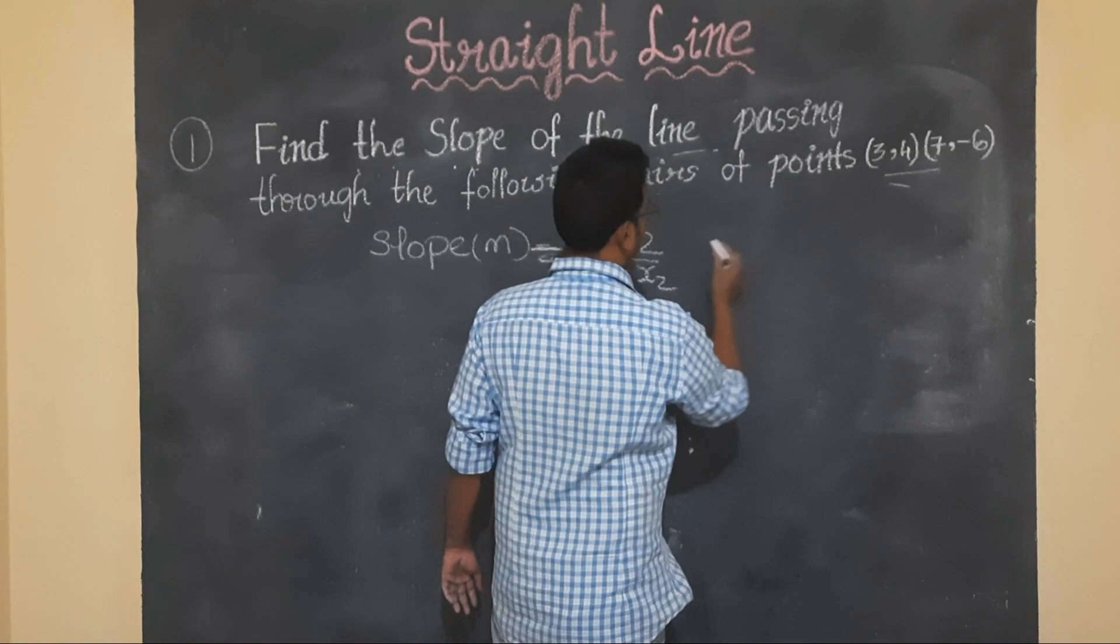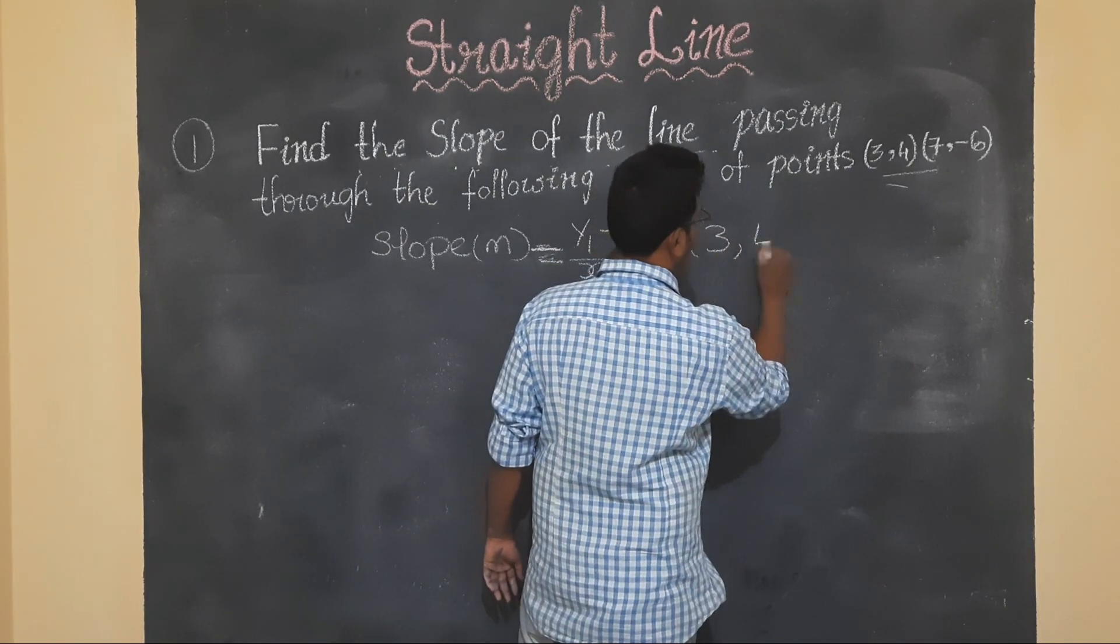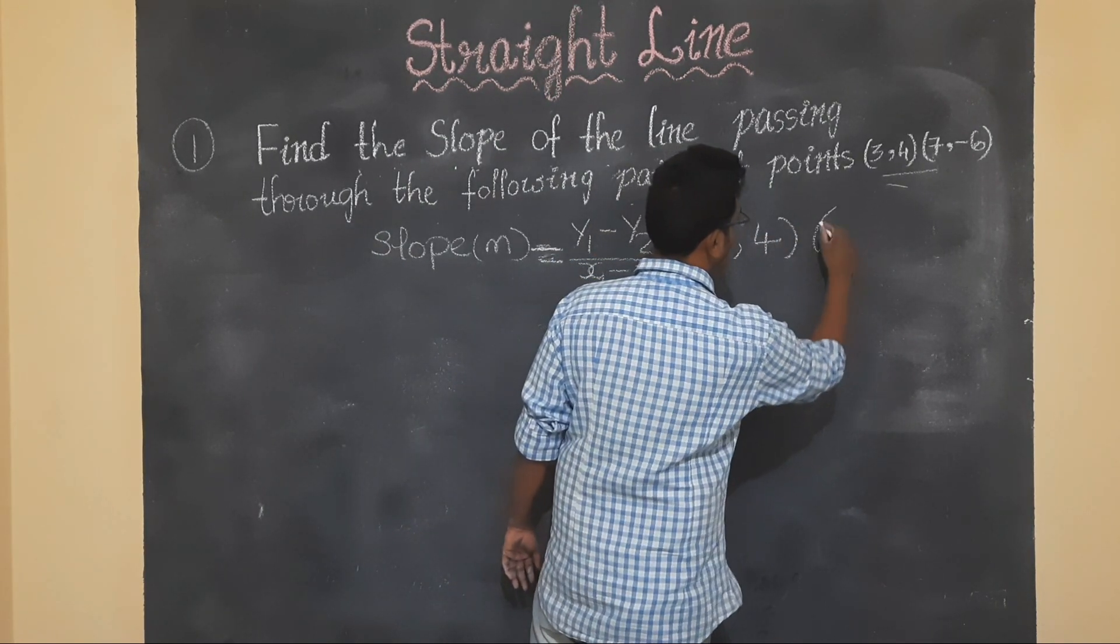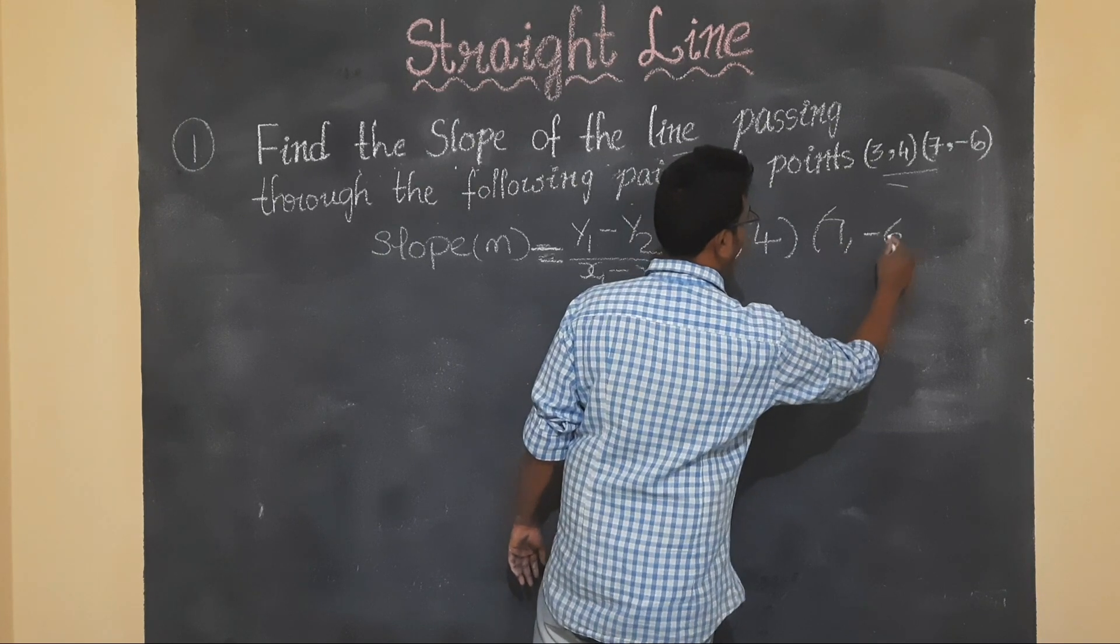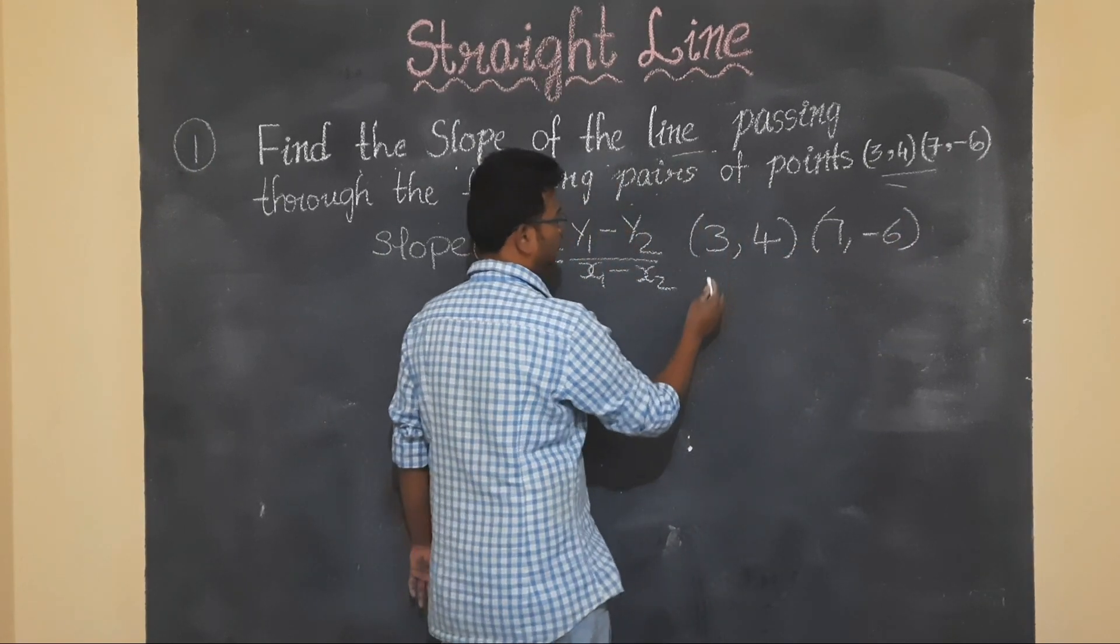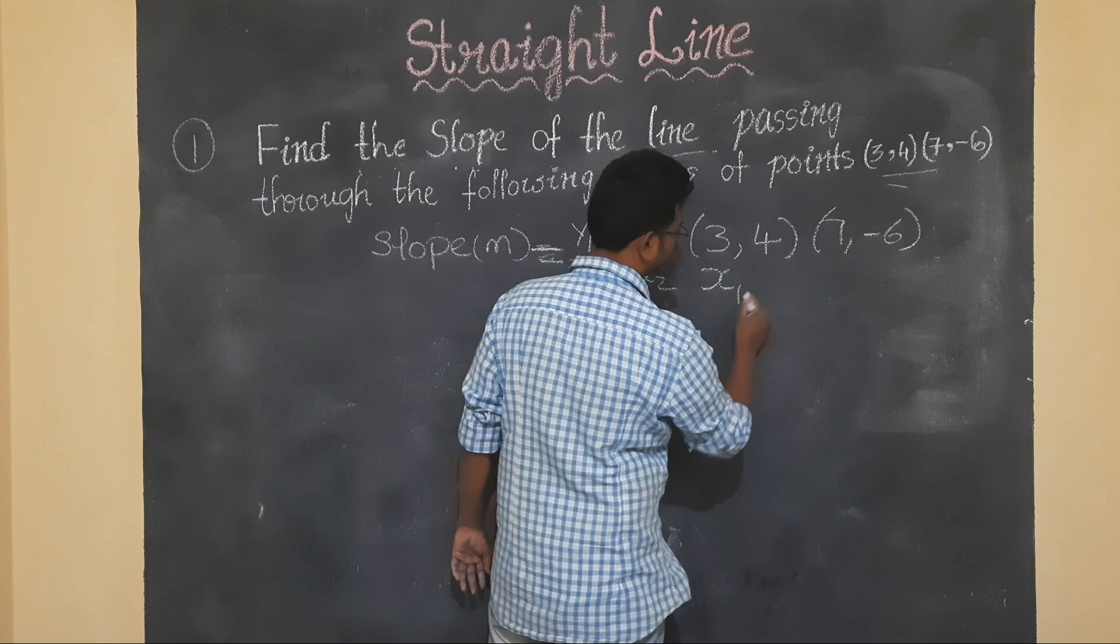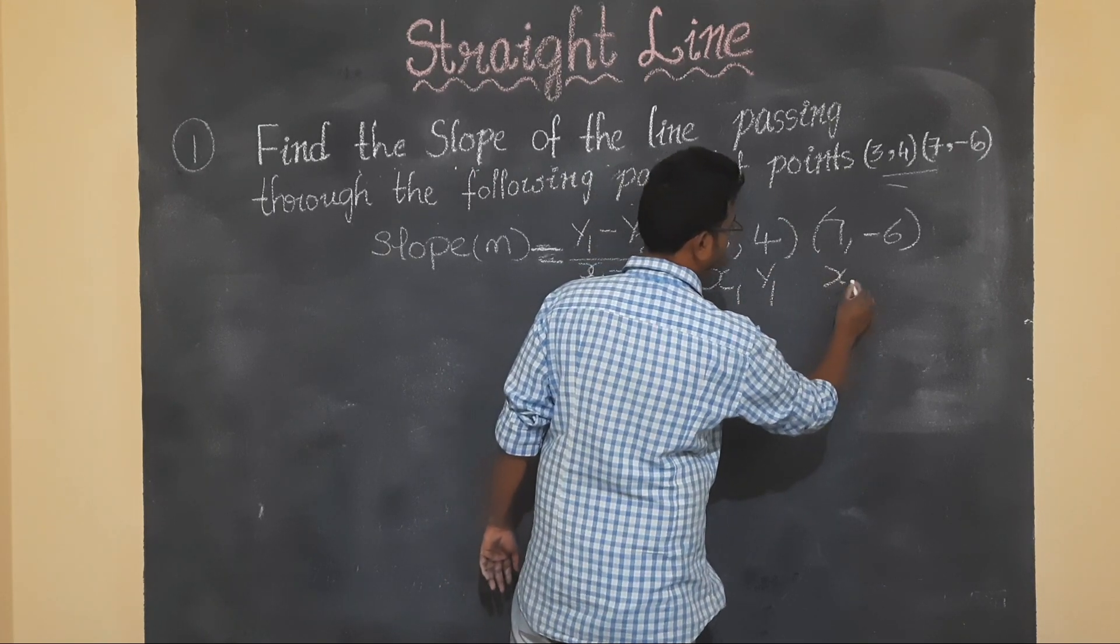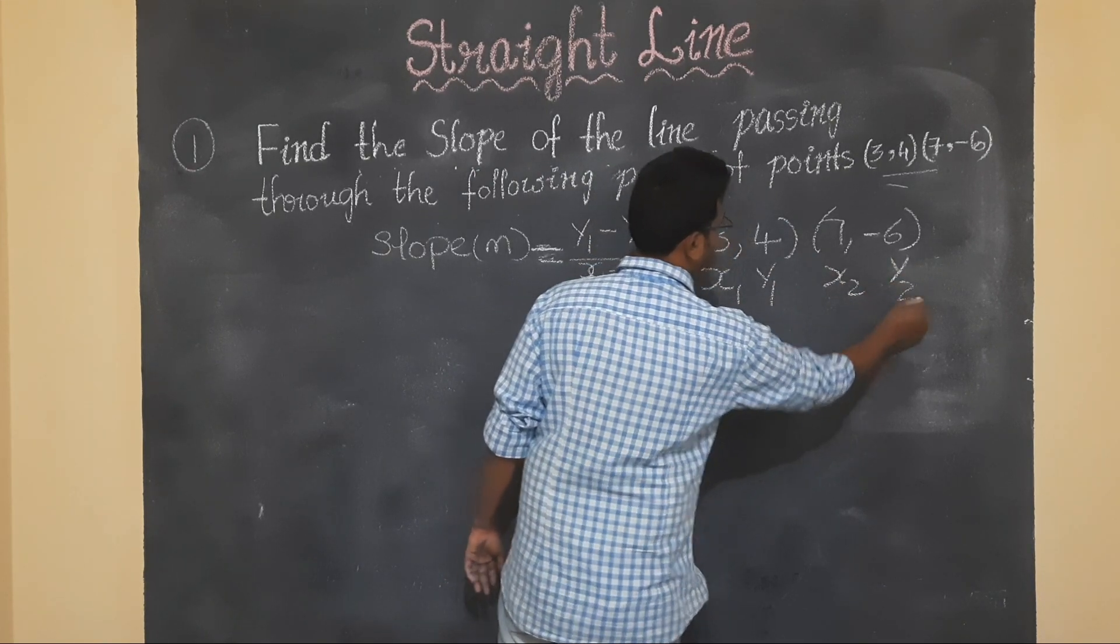So one value, let's substitute students. 3 comma 4, 7 comma minus 6. So this is x1, this is y1, this is x2, this is y2.